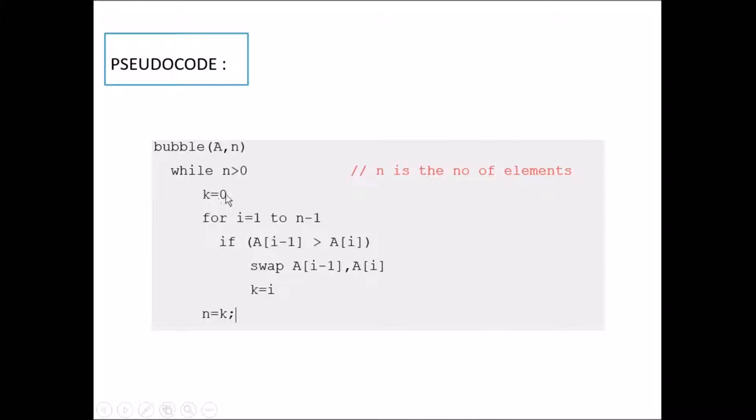So if the sorted array is given to the bubble sort, then it doesn't execute the if function. So the k value remains as 0 only. So after the first iteration you will get n is equal to 0. So the while loop execution stops. Thus we can detect whether the array is sorted or not in best case, that is big O of n.